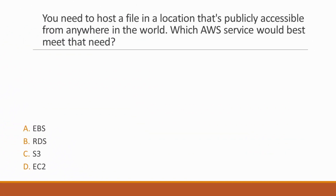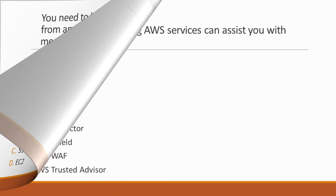Next question: You need to host a file in a location that's publicly accessible from anywhere in the world. Which AWS service would best meet that need? Options: A. EBS, B. RDS, C. S3, D. EC2. Correct answer is option C, S3, because with S3, objects can be accessed from anywhere in the world via a dedicated URL.